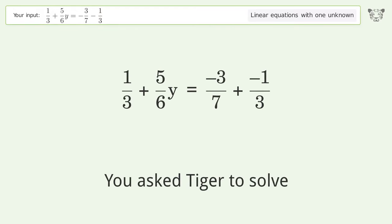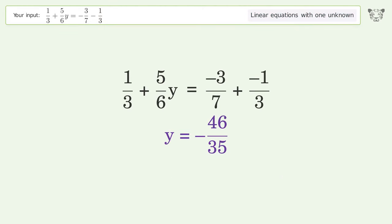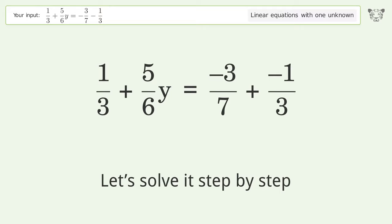You asked Tiger to solve this. It deals with linear equations with one unknown. The final result is y equals negative 46 over 35. Let's solve it step by step.